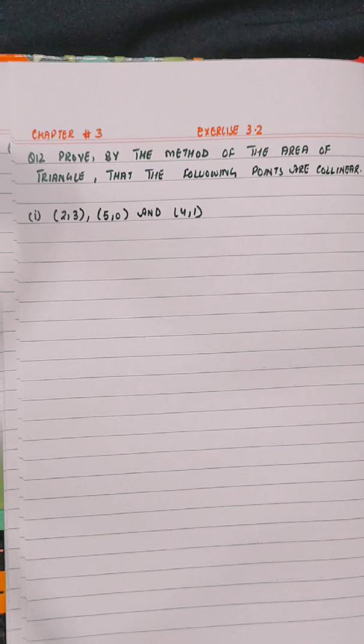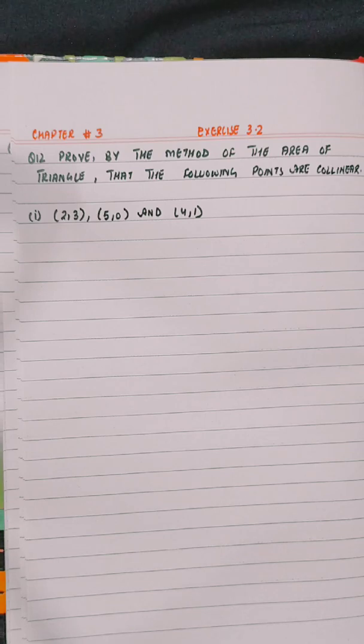Hello everyone, this is Rabi Aslam. In this video we will solve question number 12 from exercise 3.2 chapter number 3. Prove by the method of the area of triangle that the falling points are collinear. Part 1 is (2,3), (5,0), and (4,1).